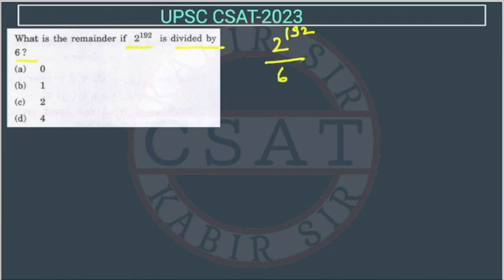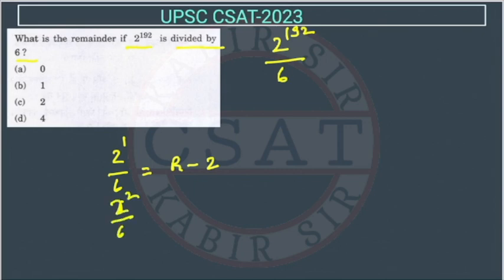Start from 2 to the power 1 divided by 6 — the remainder will be 2. If 2 to the power 2 is divided by 6, this will become 4 upon 6, so the remainder will be 4. If we take the power 3 upon 6, this will be 8 by 6, so the remainder will be 2.